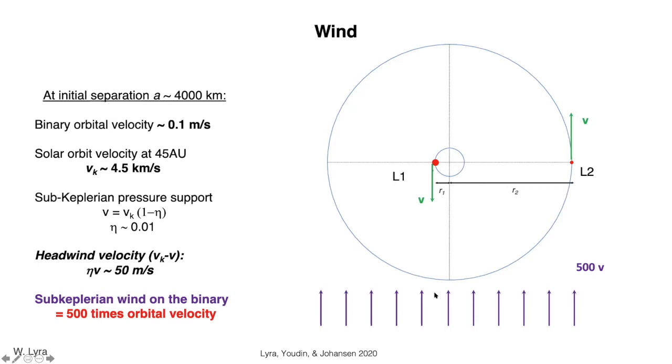the gas in the disk is supported by the pressure, so it orbits at a slightly sub-Keplerian. The difference between the central mass velocity and the velocity of the gas is usually of the order of 50 meters per second.